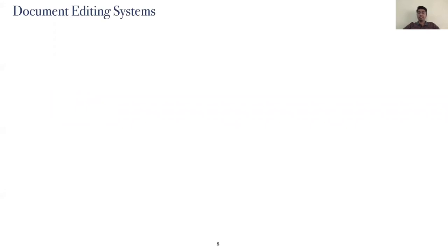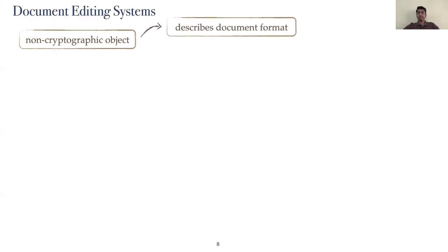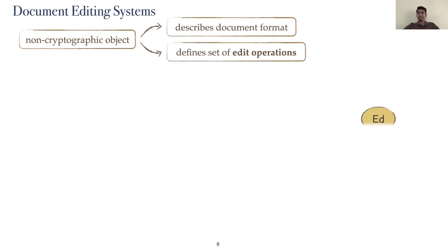Incremental cryptographic schemes sit on top of a non-cryptographic object called a document editing system. This describes the format of documents and the supported edit operations on them. The edit function is used to formalize the application of edit operations on the document. It takes a document, an operation code, and some arguments, and returns an updated document D'. The document D is a bit string that has a length that is a multiple of the block length. The operation codes and arguments are elements of a set specified by the document editing system.